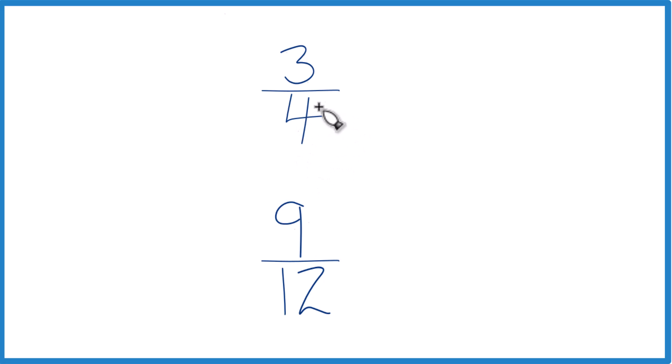You could also find a common denominator. Right now we have 4 and 12. But if we had the same denominator, we could just compare the numerators.